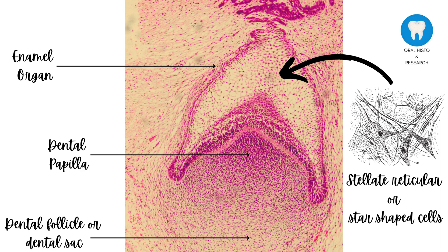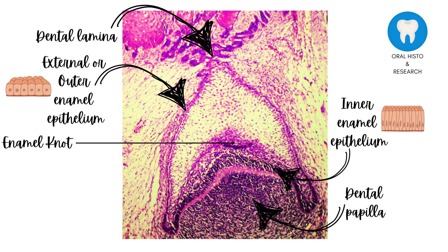The peripheral cells change into external and inner enamel epithelium. The outer enamel epithelium cells are cuboidal, whereas the inner epithelial cells are tall and columnar.